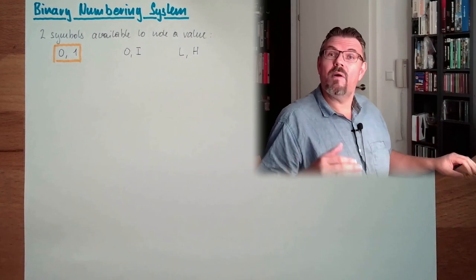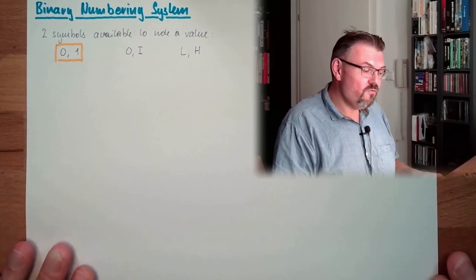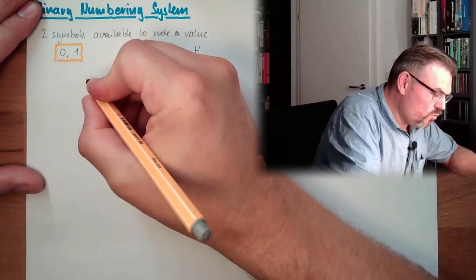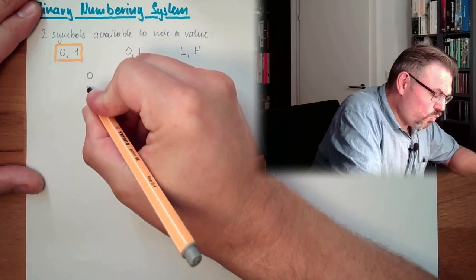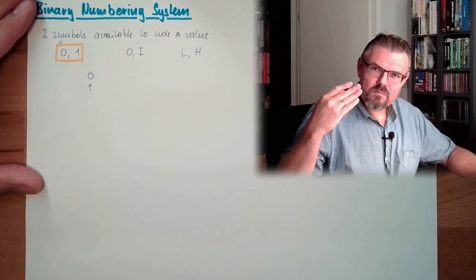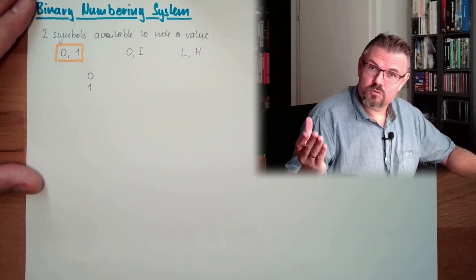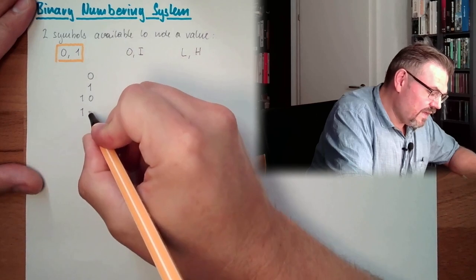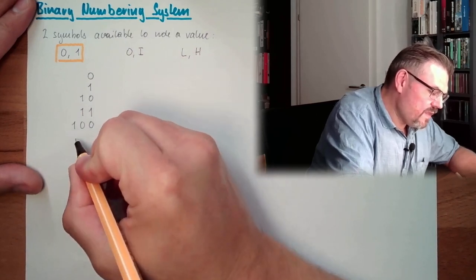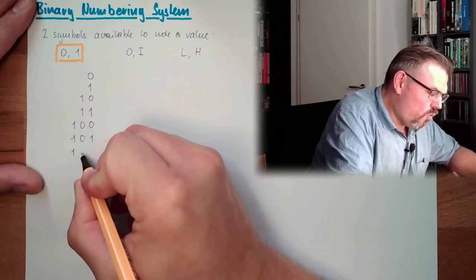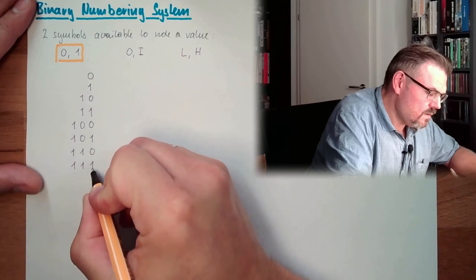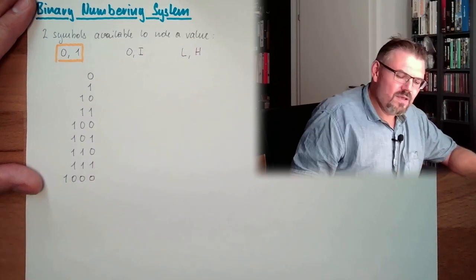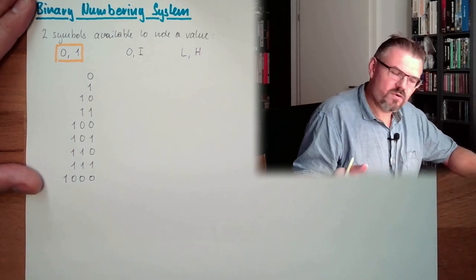Every digit in my binary number has the possibilities of two different values. And last time we did the same, like I am writing down now. So we have 0, then next possible is 1. And now all my possibilities are gone, I am already used. So I am using the next digit.